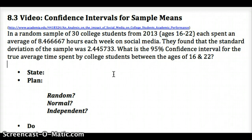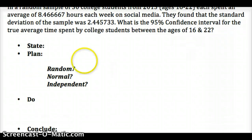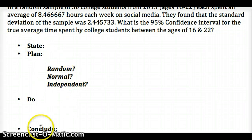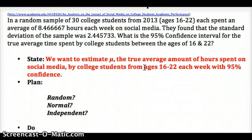With all of our problems, we're going to go through and do the State, Plan, Do, Conclude. We want to always hit those four steps. This is the template you want to fill out every time. For State, we're going to state the problem: we want to estimate mu, the true average amount of hours spent on social media by college students from ages 16 to 22 each week, with 95% confidence.